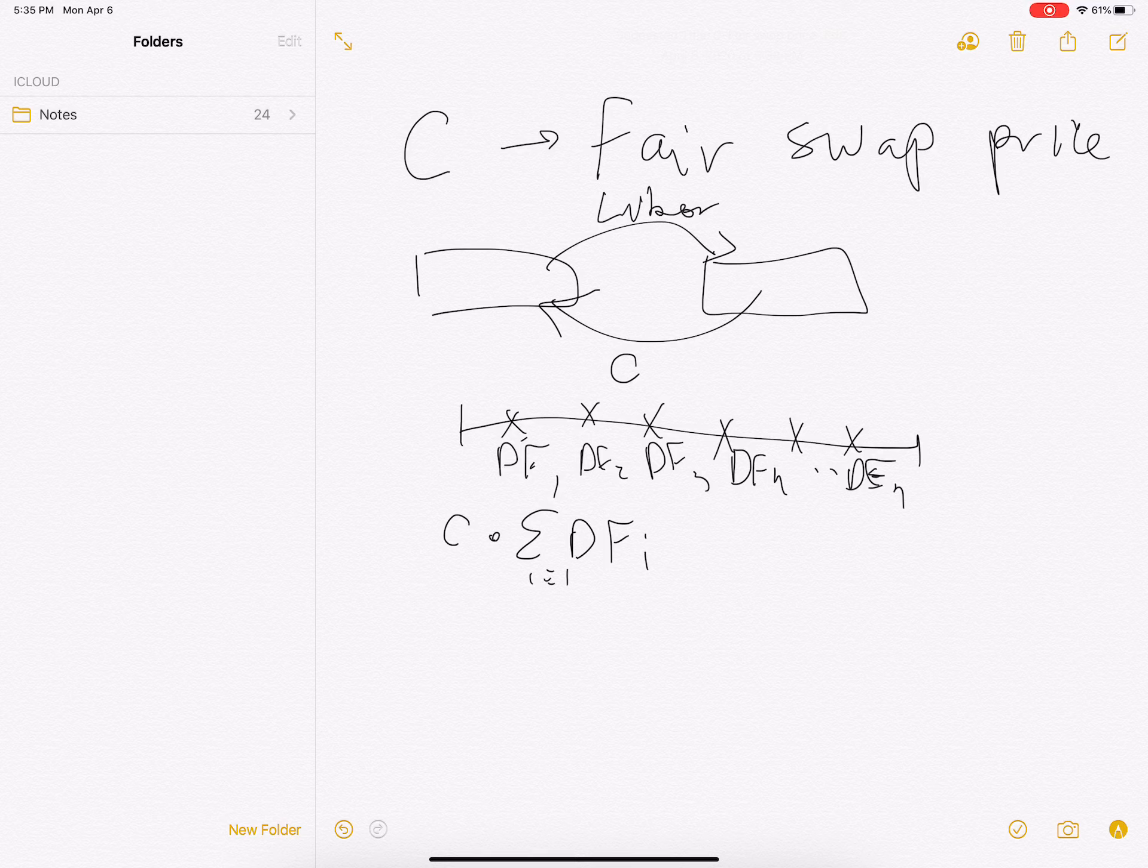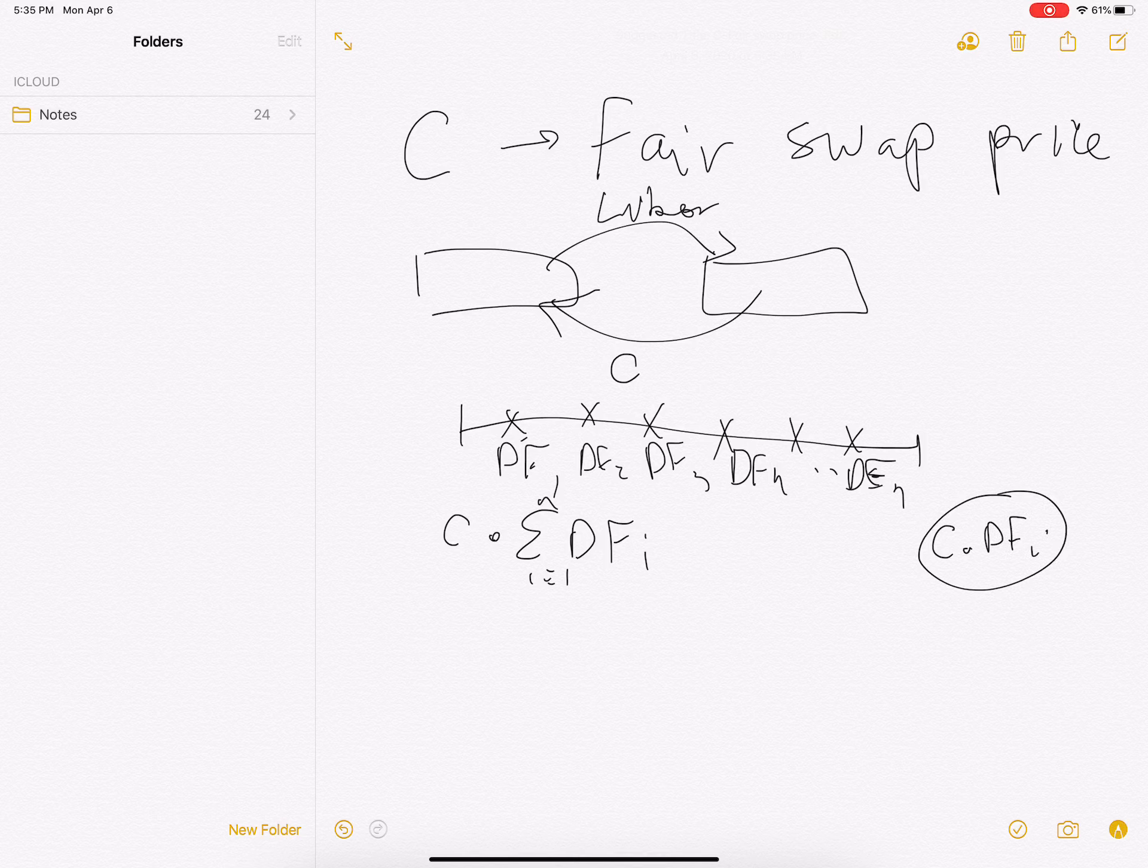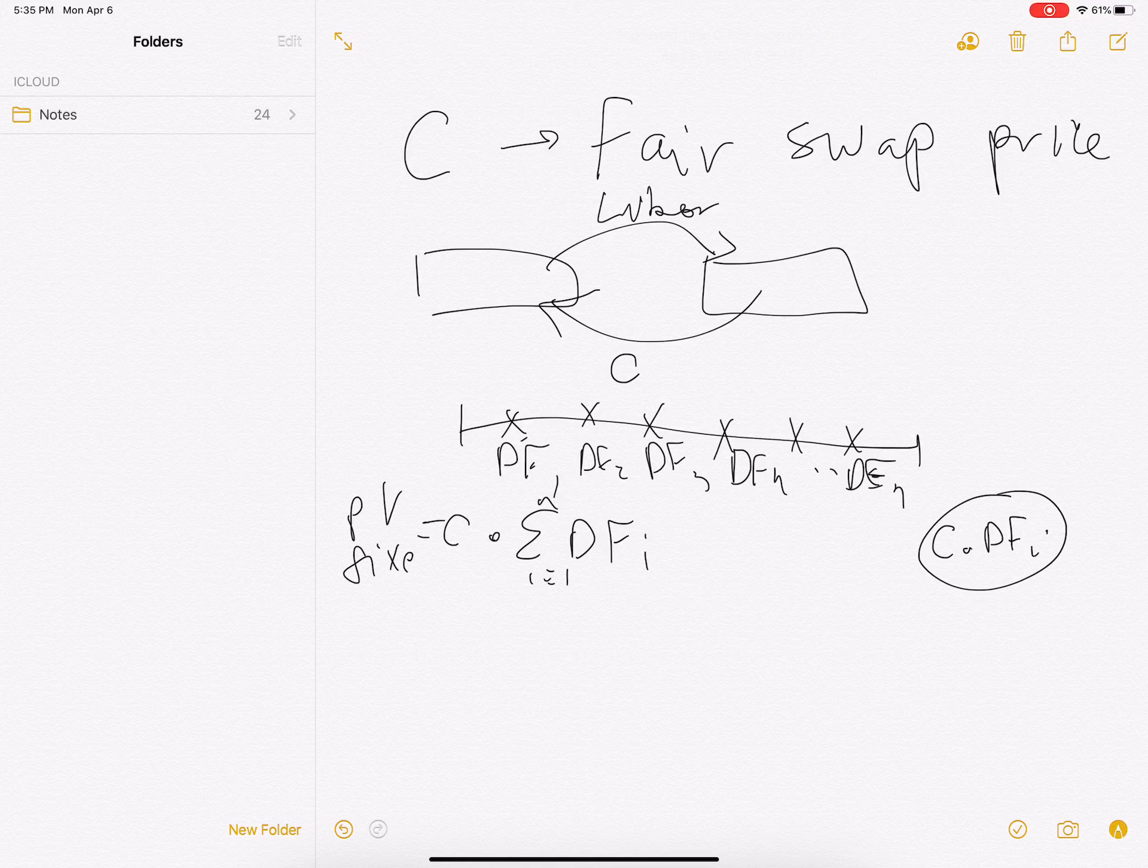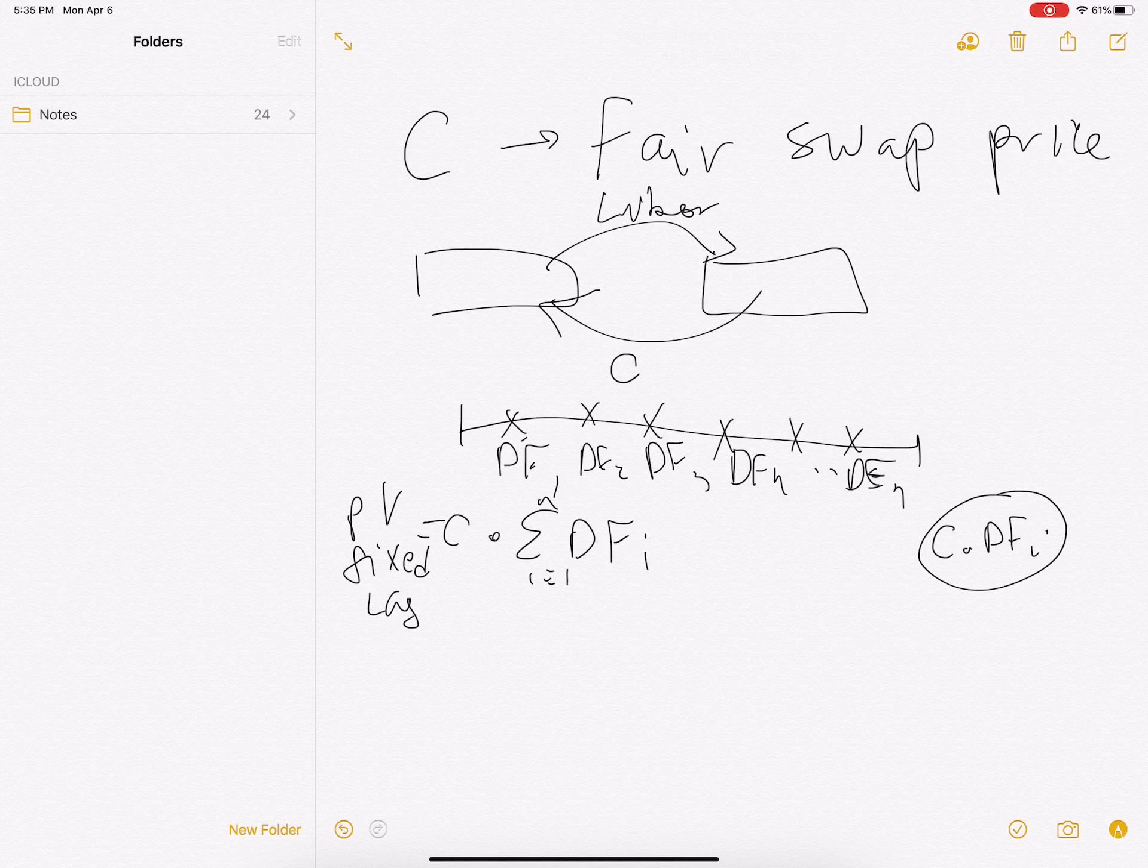At point i, my present value is going to be C times DFi, and I just sum it. So this is going to be the present value of the fixed leg.